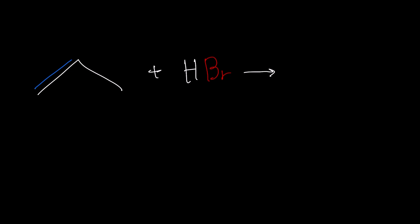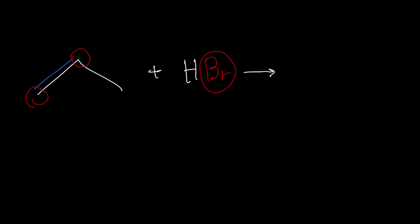The hydrogen and the bromine are going to attach to the carbons that are across the double bond. So the double bond is here, and the two carbons across it are going to be this one and that one. One of those carbons is going to have the hydrogen and the other one is going to have the bromine. But how do we determine which has the hydrogen and which has the bromine?